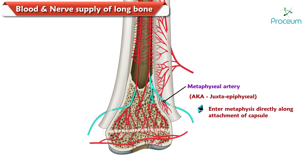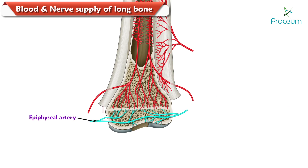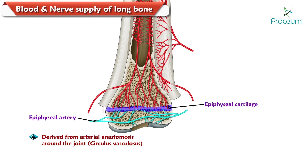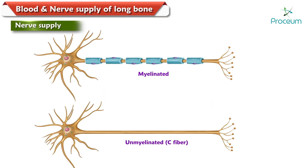The metaphyseal arteries, also known as the juxta-epiphyseal arteries, are derived from the neighboring arteries and enter the metaphysis directly along the attachment of the capsule. The epiphyseal arteries are derived from the arterial anastomosis around the joint, known as circulus vasculosis. They enter the epiphysis either directly or after piercing the epiphyseal cartilage.